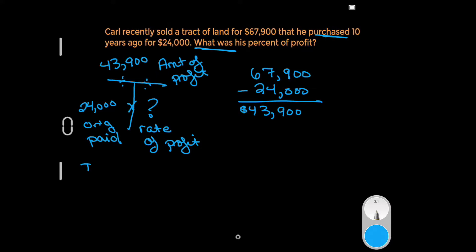So we remember TGIF—top goes in first. Into the calculator, we'll put $43,900 divided by $24,000, and that's going to give us an answer of 1.829, which I would turn to 1.83.